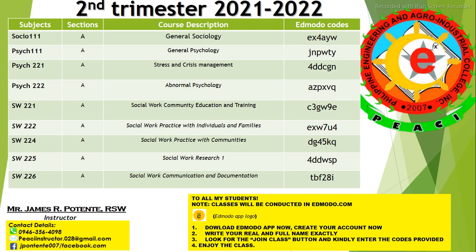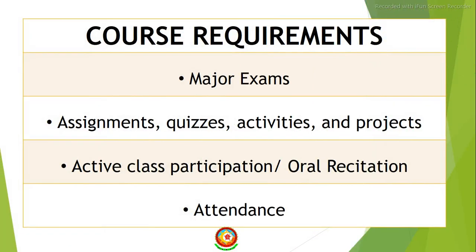You can contact me with these details — here's my number, email, and Facebook. Class will be conducted in Edmudo.com, so download the Edmudo app now, create your account, and write your real full name in the COR. Look for the Join Class button and enter the codes provided, and let us enjoy our class.